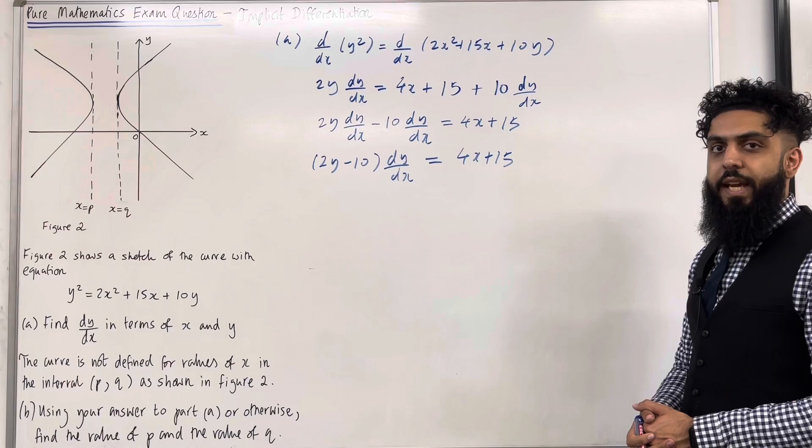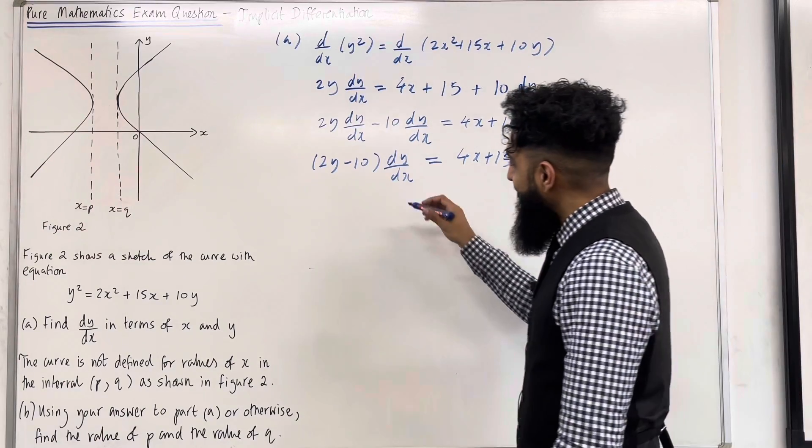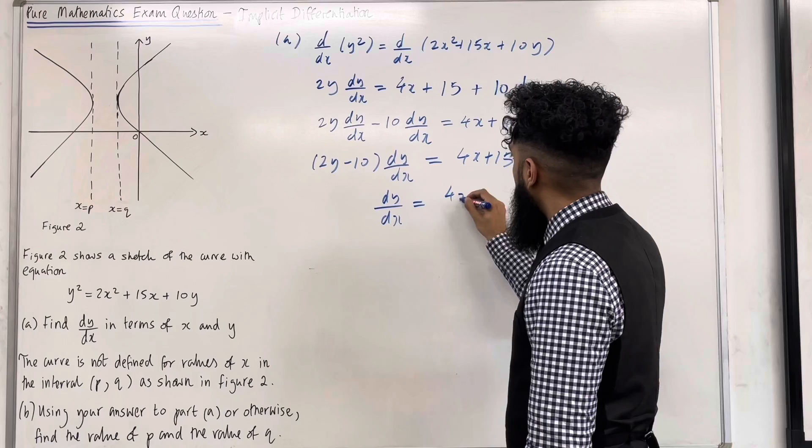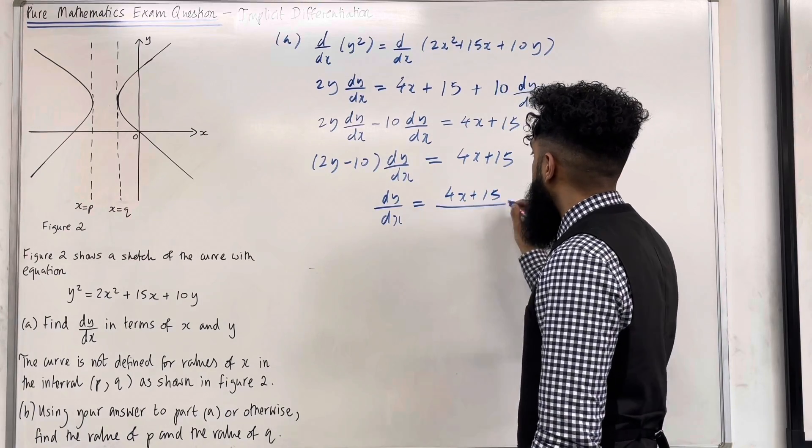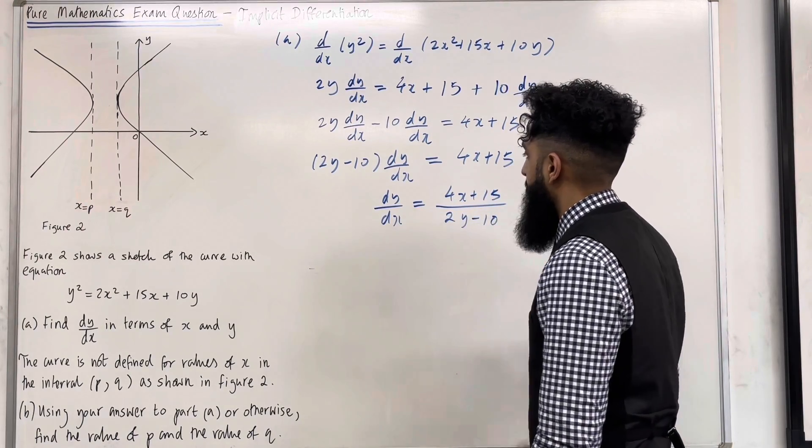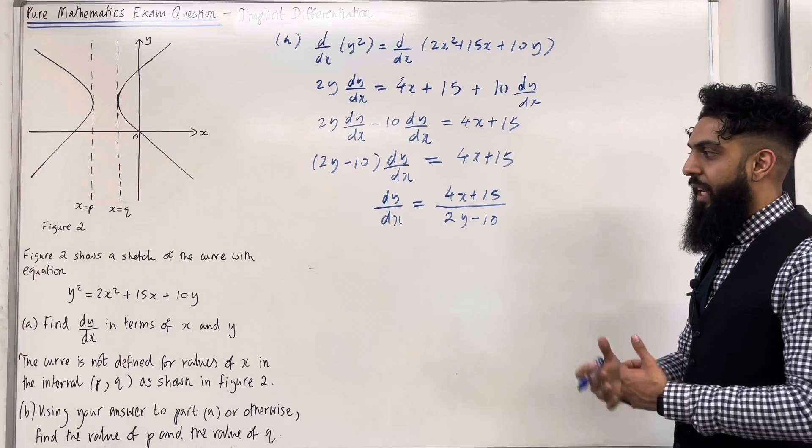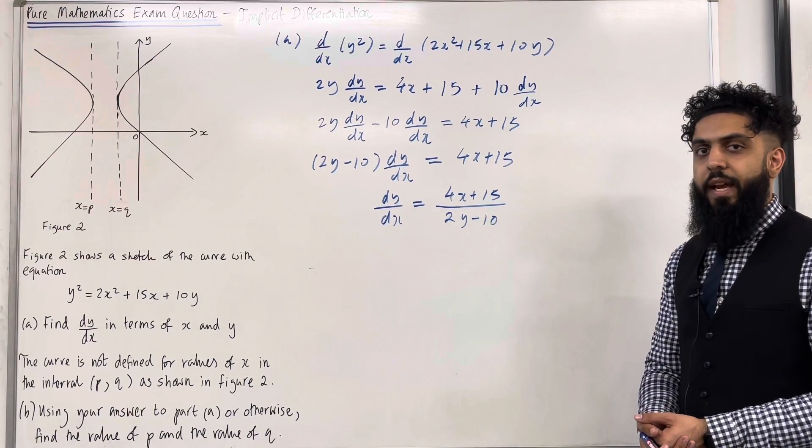So now I can make dy over dx the subject. So dy over dx is equal to 4x plus 15 divide by 2y minus 10. That is the answer to part A. In other words, we have calculated dy over dx in terms of x and y.